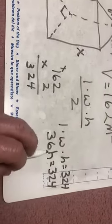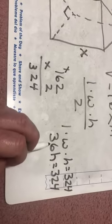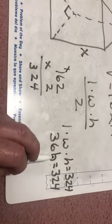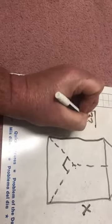Okay, so now to solve for h, I'm going to have to divide both sides by 36. 36h divided by 36 is going to equal h. And then I'm just going to have to think, how many times can 36 go into 324?